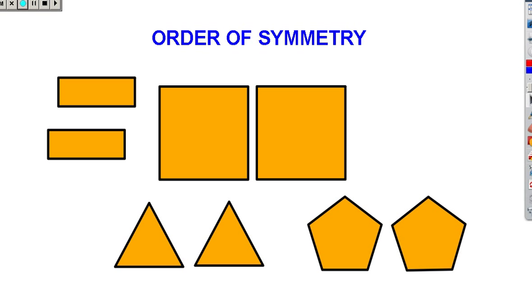And what that means is how many times can you spin the shape around and have it look exactly the same as the way that it started? And you're going to count the number of times on the spin, including the time when it gets back to its original position.